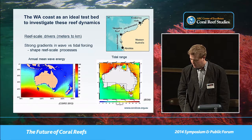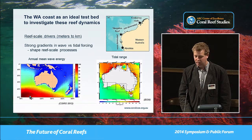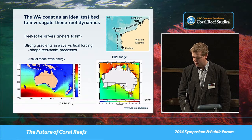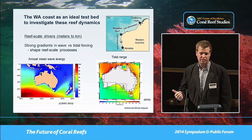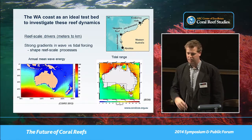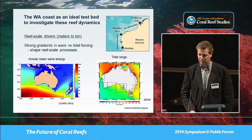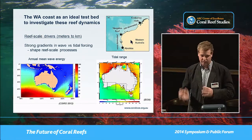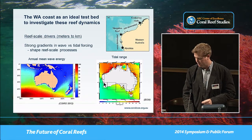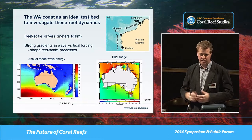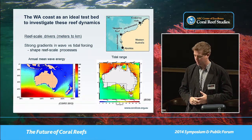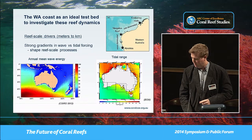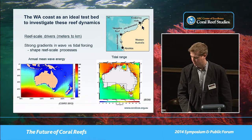Looking at an annual mean wave energy plot, the west coast of Australia gets a substantial amount of wave energy. Going up into the Pilbara and the Kimberley, it's relatively sheltered on average, but gets episodic extreme events due to cyclones. Interestingly, the tidal pattern is flipped — the southern part is microtidal, but the Kimberley has the largest tidal range in any tropical region of the world, up to 10 meters. So we go from wave-dominated reefs to tide-dominated reefs in the far northwest.